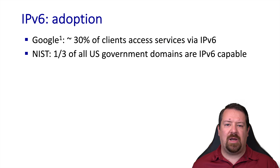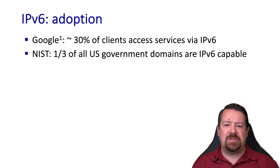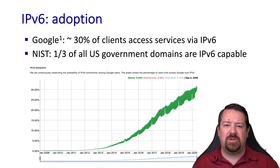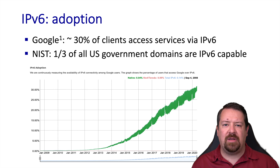So how well is IPv6 adoption actually working? It depends who you ask and what you consider adoption. It's unusual for an individual to send and receive all of their internet traffic over IPv6 only — for example, even when connecting to an IPv6 website, you may have used IPv4 to do a DNS lookup to find the IPv6 address. Google publishes adoption figures showing that roughly 30% of its clients are able to access its services over IPv6. According to NIST, about one-third of all US government domains have some availability over IPv6. However, in domains such as mobile carriers, some are reporting that over 90% of their traffic is using IPv6.